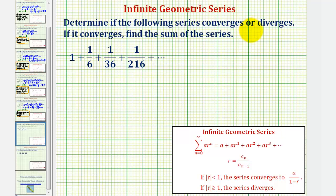Now we'll look at two examples of: given a series, determining if it converges or diverges. Looking at the first series, we should recognize this as a geometric series.